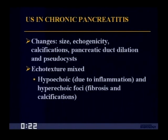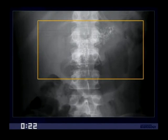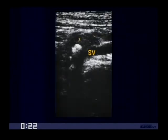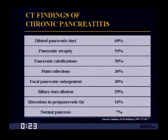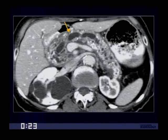On ultrasound, we look for changes in echogenicity and size, calcifications, duct dilatation, and pseudocysts — including mixed echogenicity with hypoechoic and hyperechoic foci due to inflammation, fibrosis, and calcifications. On plain film, if you see calcifications, the diagnosis is quite easy. On CT, you can see dilatation of the pancreatic duct with secondary radicals and a variable appearance including calcifications in about half. In an older study, a dilated pancreatic duct was seen in about two-thirds, atrophy or calcifications in half, but a normal-appearing pancreas was seen in as many as 7% of patients. A typical appearance of chronic pancreatitis shows a beaded duct and multiple calcifications.